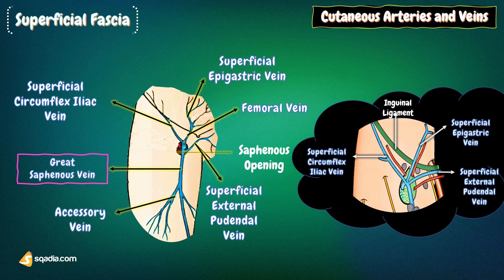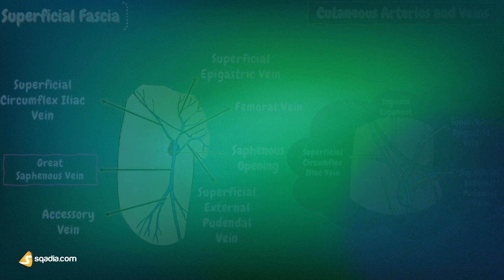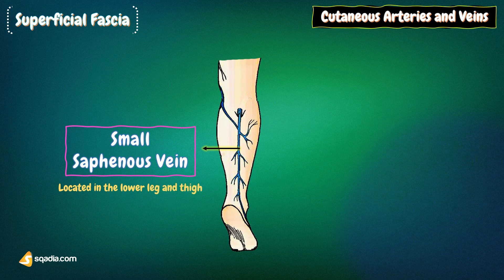As for the small saphenous vein, it is located in the lower leg and thigh. This vein usually gives off a branch, the vein of Giacomini, which extends up the thigh and runs between the biceps femoris and semimembranosus muscles. It begins in the ankle, runs up the back of the leg behind the calf muscle, and along the inner aspect of the thigh, draining into the popliteal vein, which is located behind the knee.